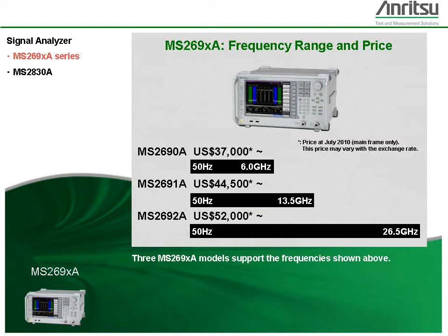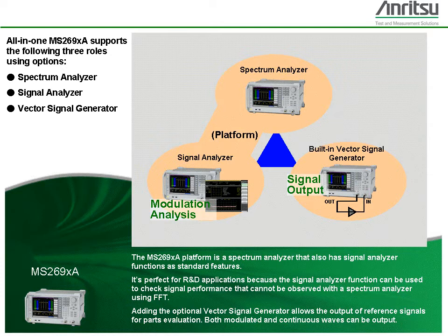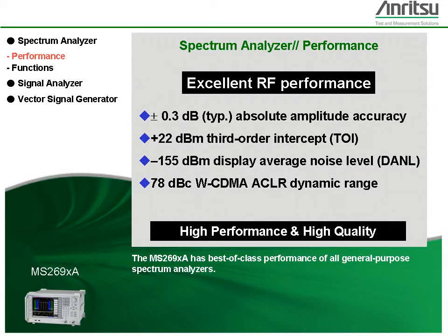Three MS269XA models support the frequencies shown above. The MS269XA platform is a spectrum analyzer that also has signal analyzer functions as standard features. It's perfect for R&D applications because the signal analyzer function can be used to check signal performance that cannot be observed with a spectrum analyzer using FFT. Adding the optional vector signal generator allows the output of reference signals for parts evaluation. Both modulated and continuous waves can be output. The MS269XA has best-of-class performance of all general-purpose spectrum analyzers.